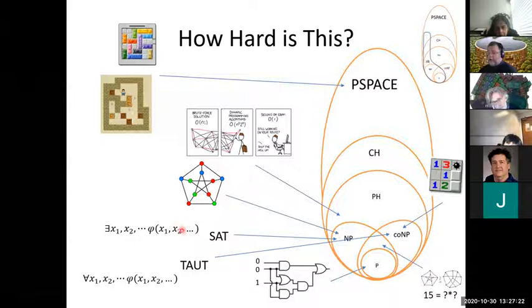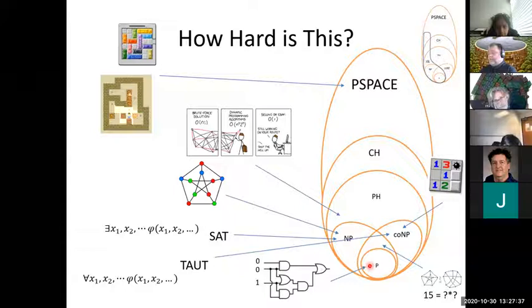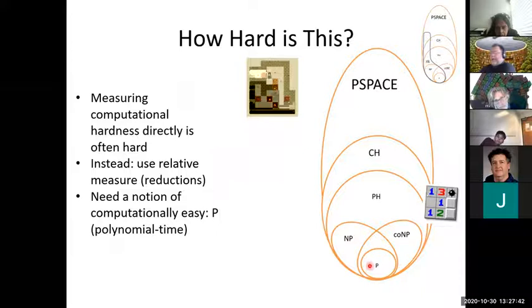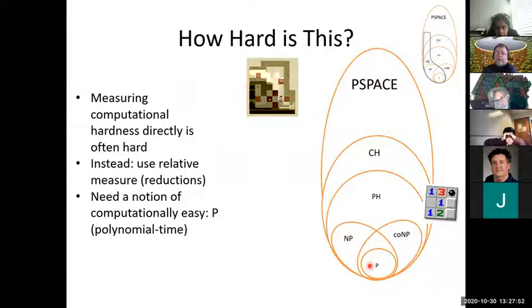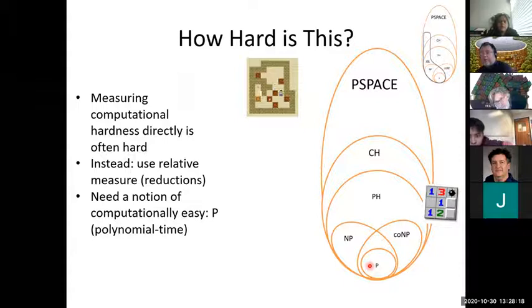Satisfiability — is a logical formula satisfiable — is in NP. Tautology — is a logical formula always true — is in co-NP. If you have a Boolean circuit, evaluating the value of it is in polynomial time — that's our notion of easy. Measuring complexity absolutely is difficult. The way we actually measure complexity is by comparing different problems and saying which one is easier, which one is harder. Imagine two people running next to each other — you may not know how fast they're running, but you can see who's faster.